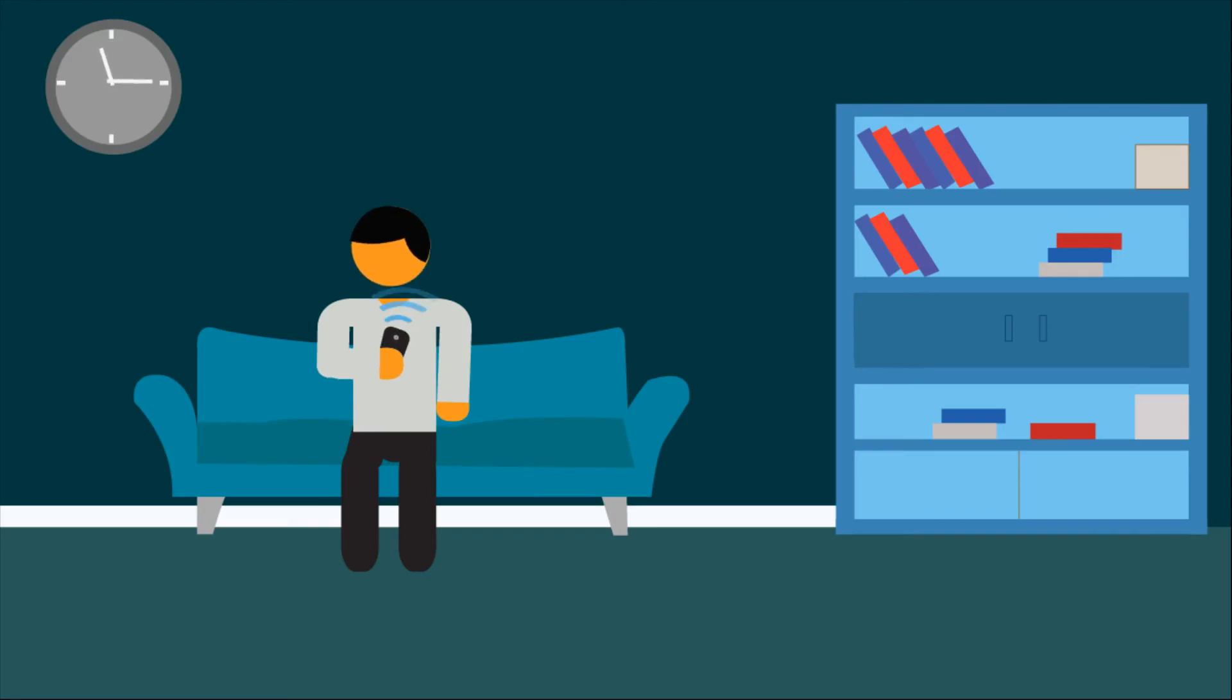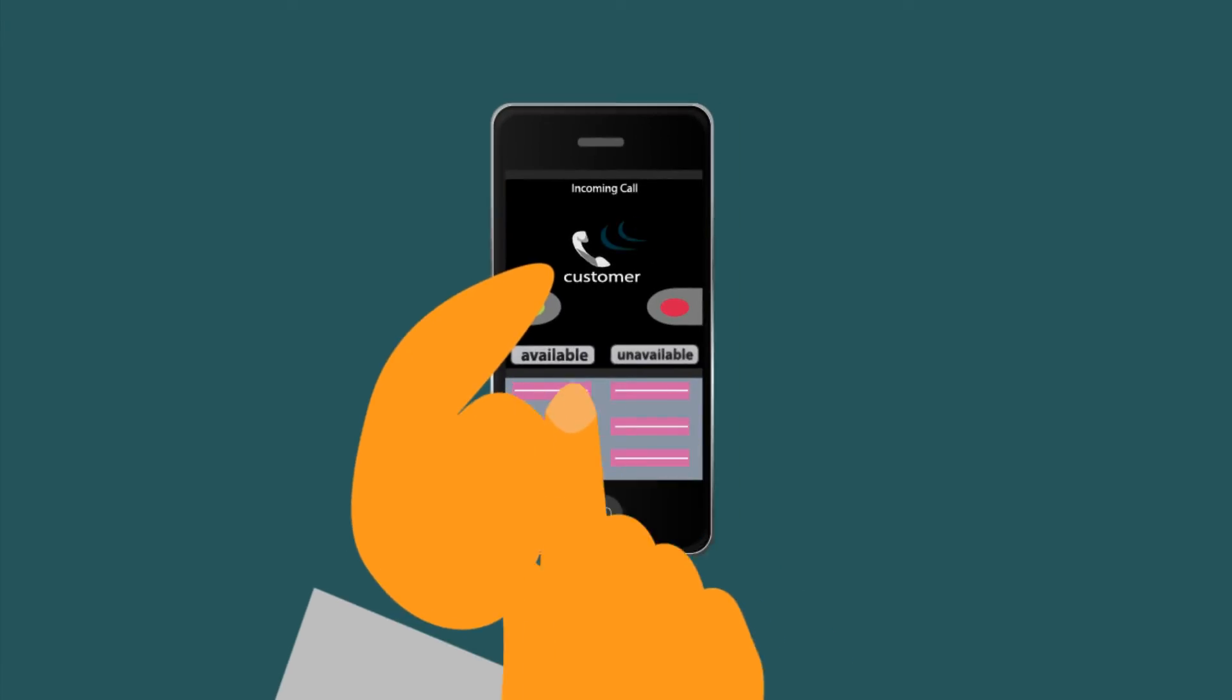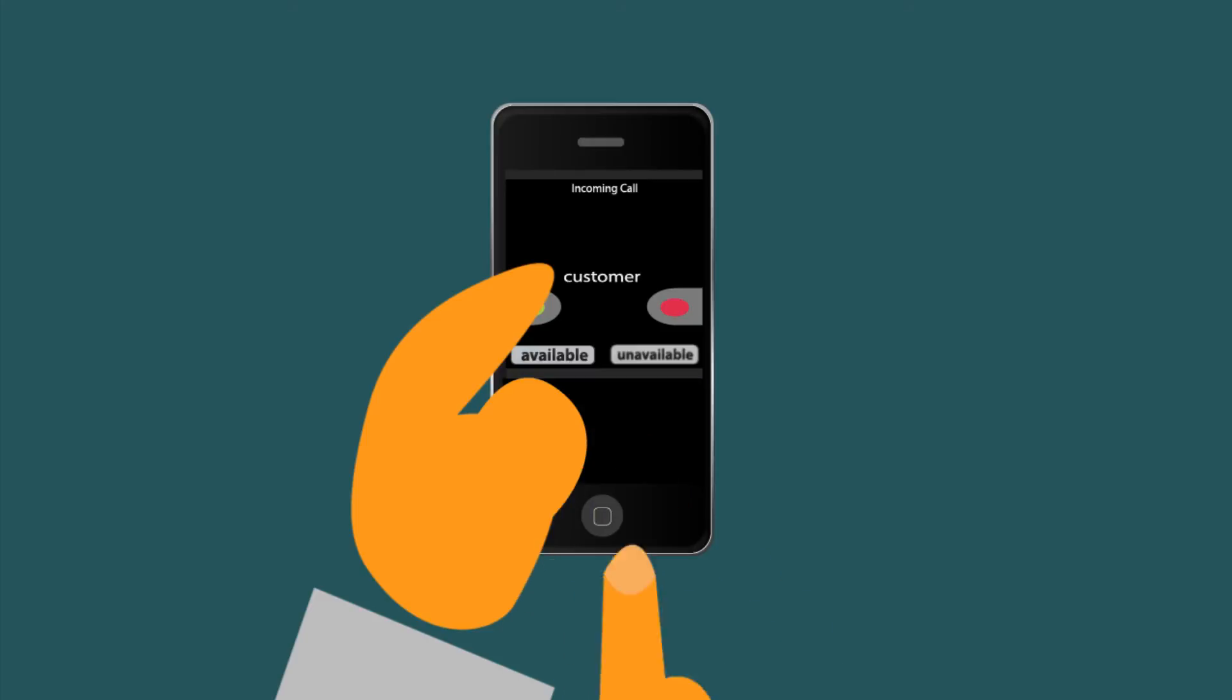You stay in full control of your self-set budget at all times. Simply switch your status to unavailable. You will stop receiving calls and the push button on the website will disappear.